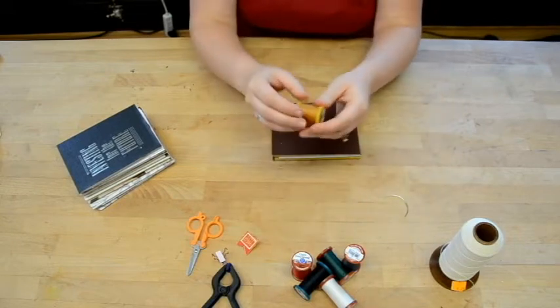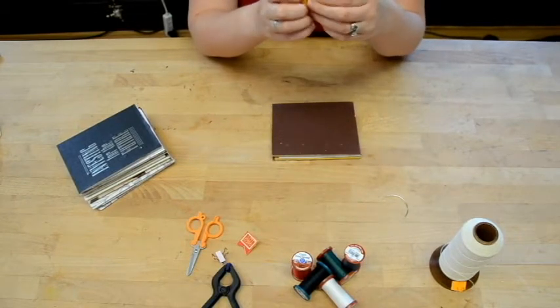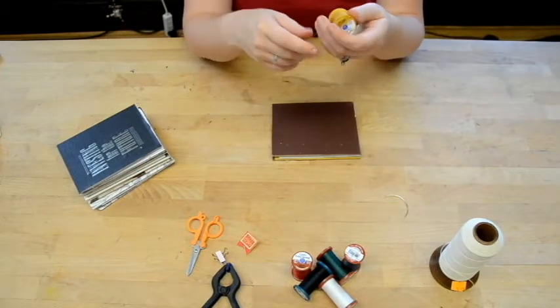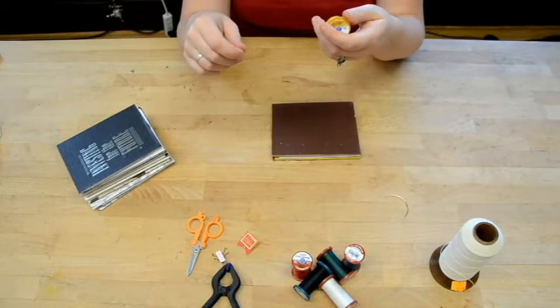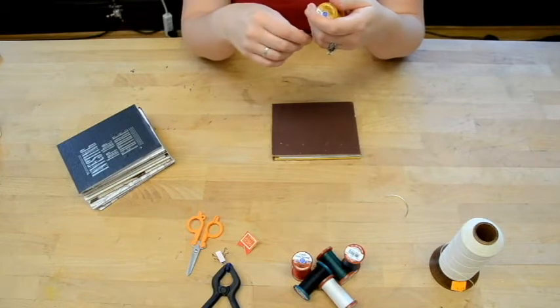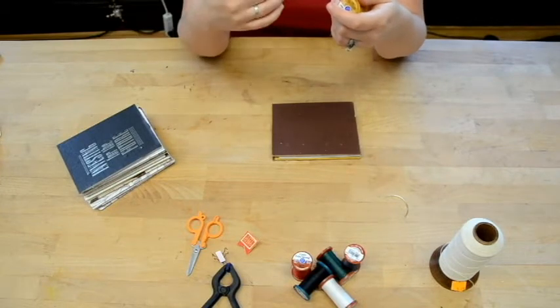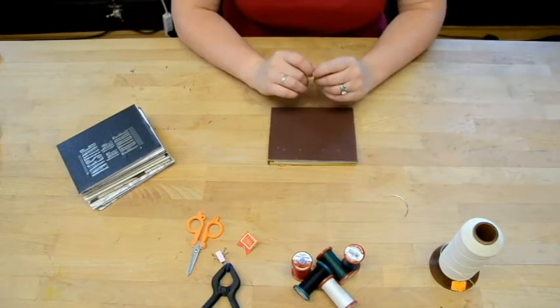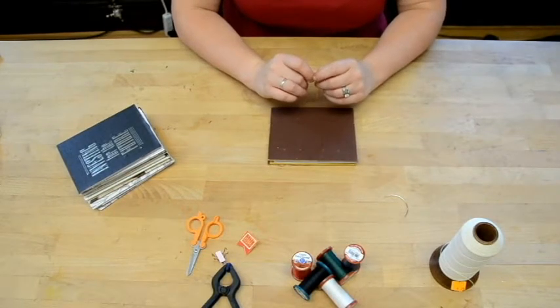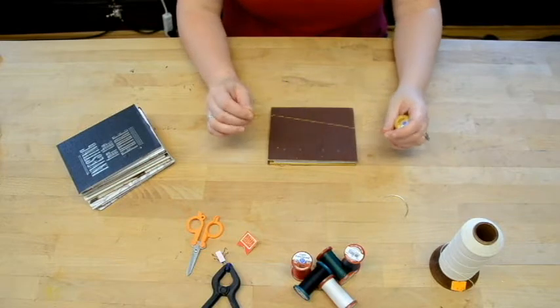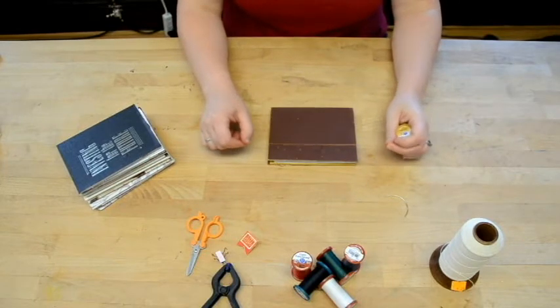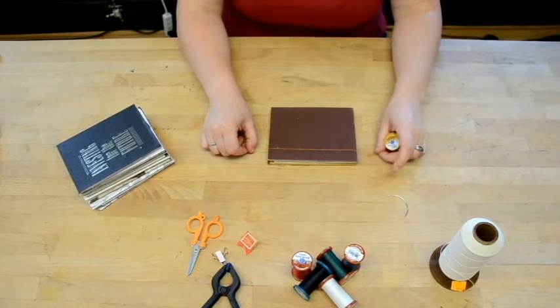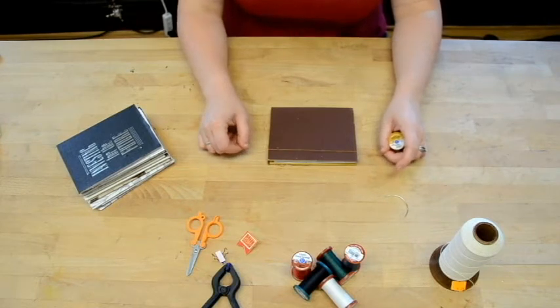So what you want to do to get started is first you will measure off the amount of thread that you need. You don't have to do this precisely. I will show you in a later video how to tie on extra thread if you run short. So this way of measuring I have found to be mostly accurate for me. So what you do is you measure one length for each signature and for each cover. So that would be six lengths that we will then double.